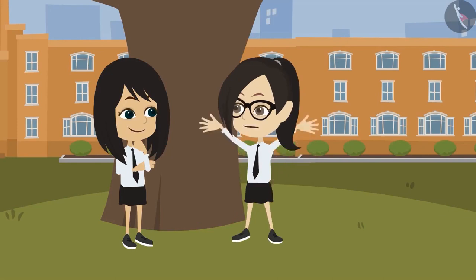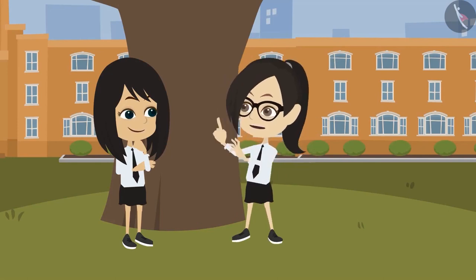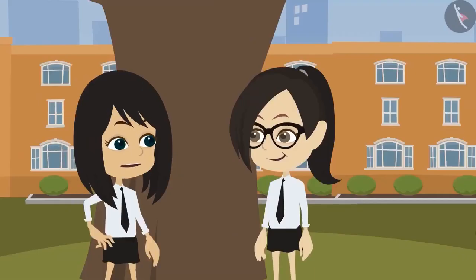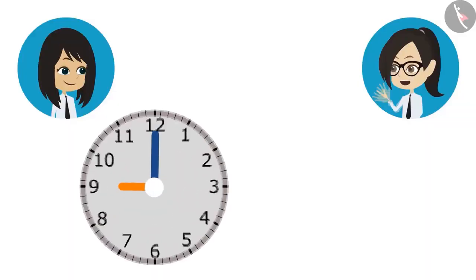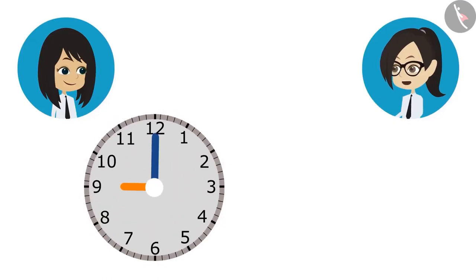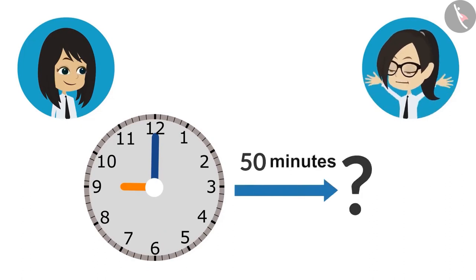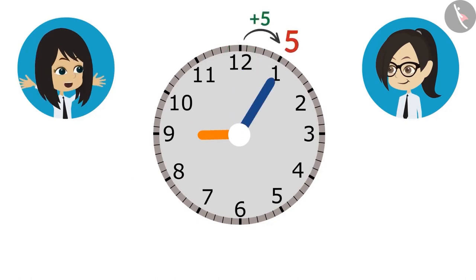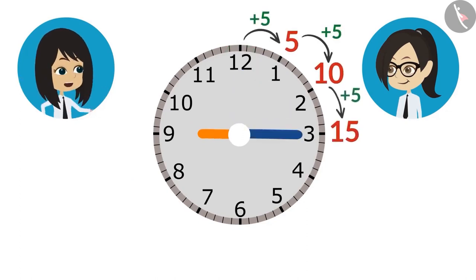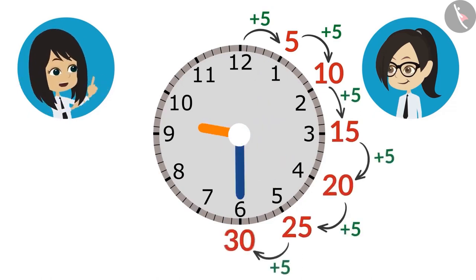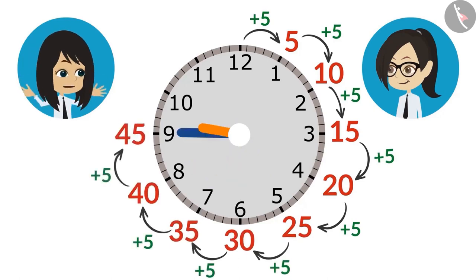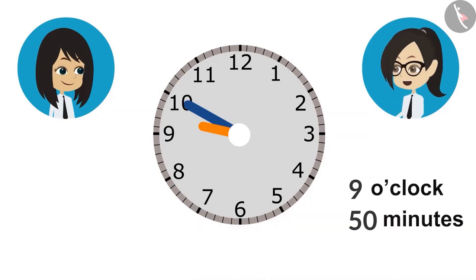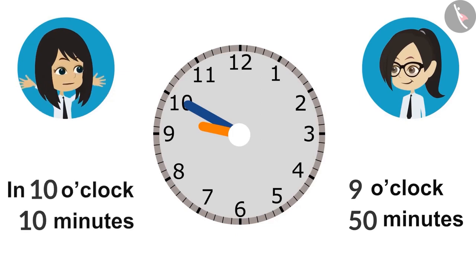Let's find out what time a 50-minute class will finish if it starts at 9 o'clock in the morning. The start time and duration are known, so we find the end time. The minute hand is at 12. Moving it: 5 at 1, 10 at 2, 15 at 3, 20 at 4, 25 at 5, 30 at 6, 35 at 7, 40 at 8, 45 at 9, and 50 minutes at 10. This means our class will end at 50 minutes past 9 o'clock — we can also say 10 minutes to 10 o'clock.